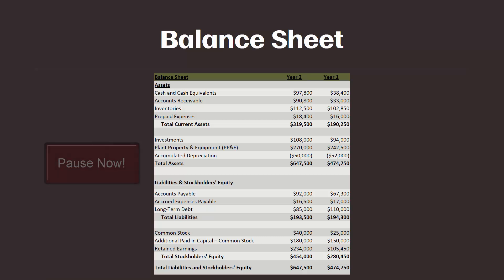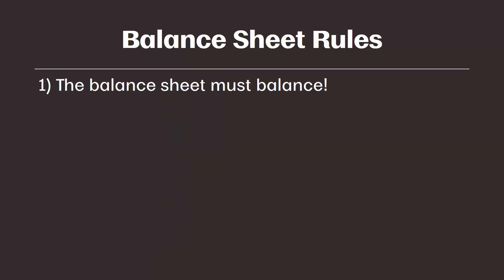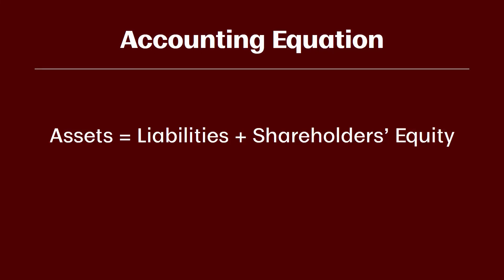Welcome back. Let's go over a few things you should have noticed. First, the balance sheet must balance — that's rule number one. It's where we started in the accounting module. Assets must equal liabilities plus shareholders' equity.